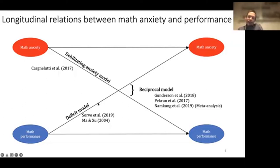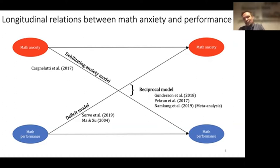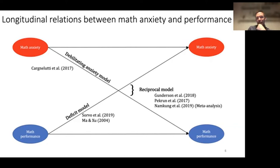The second model is the deficit model, which assumes that poor math performance drives the development of math anxiety — if you perform poorly, your self-confidence goes down, situations feel less fun, and you become anxious about being in situations where you feel incompetent. Third, some studies support a reciprocal model where both directions are at play. The literature is by no means in agreement on how these relationships really look.